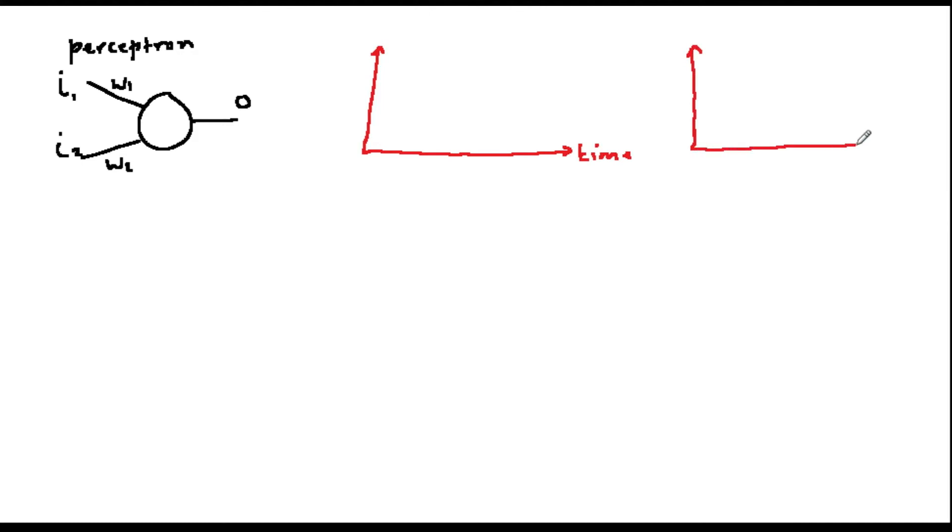However, as we saw in our first videos, this is not what a biological neuron does. It instead encodes its output as frequencies. A low output corresponding to a low frequency, and a high output corresponding to a high frequency.